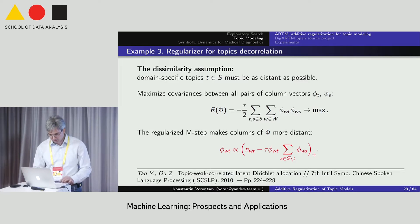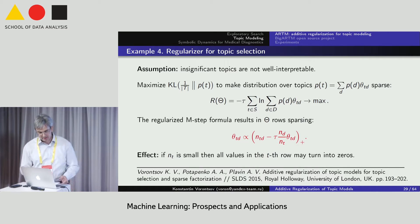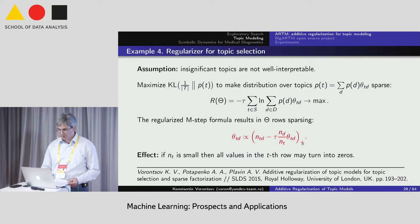Another useful regularizer is decorrelating of domain-specific topics. Again, the inference is very trivial and it is one-line differentiation of the regularization criterion. Another useful regularizer is sparsing of whole distribution over topics. It produces a very interesting effect of topic selection because the less significant rows of the theta matrix vanish and turn to zero.